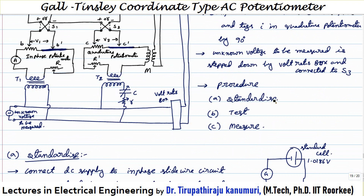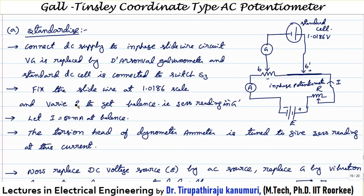The procedure has three steps: standardization, testing, and measurement. Standardization ensures the scale reading is accurate — resistance per unit length multiplied by length gives resistance, and that resistance multiplied by the operating current gives the voltage drop. Therefore, the correct operating current must be maintained for accurate readings. For standardization, the DC supply is connected to the potentiometer circuit through an ammeter and rheostat.